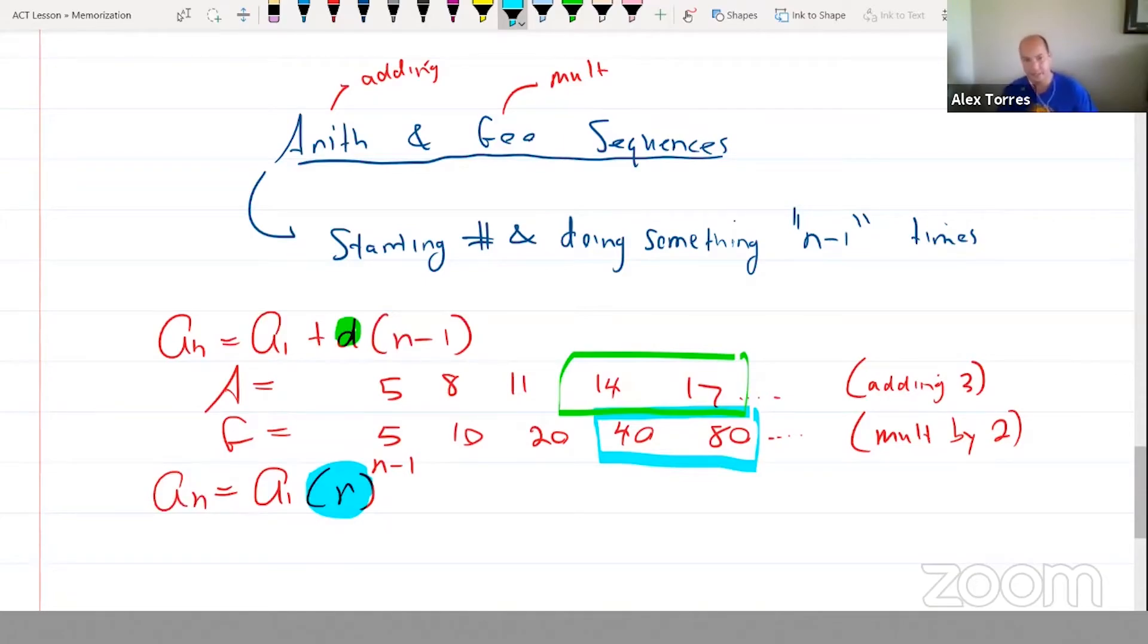So for instance, I might get this sequence here that we have in pink, and the question might say, well, what is the 98th term of that?